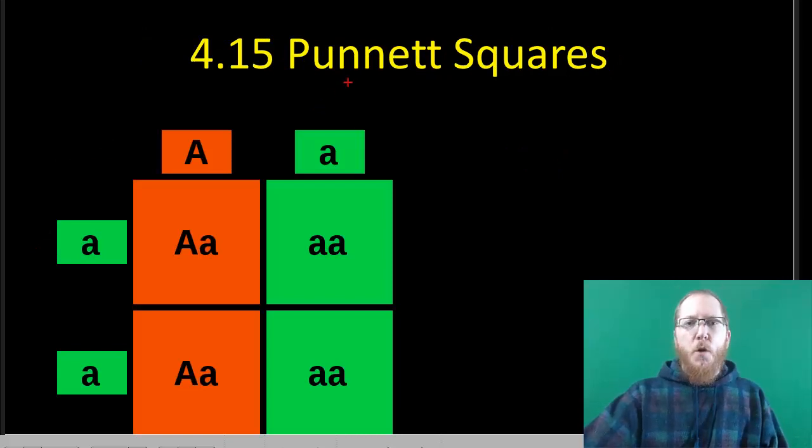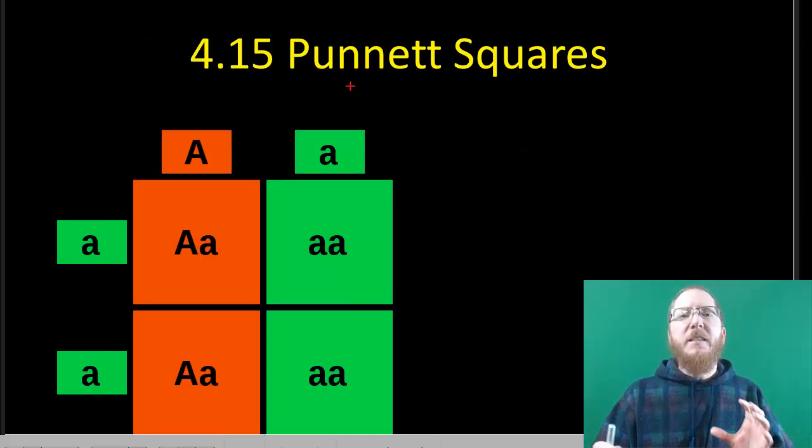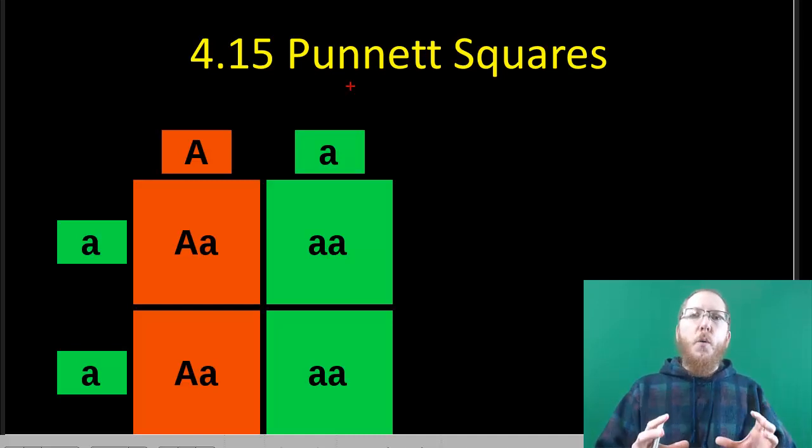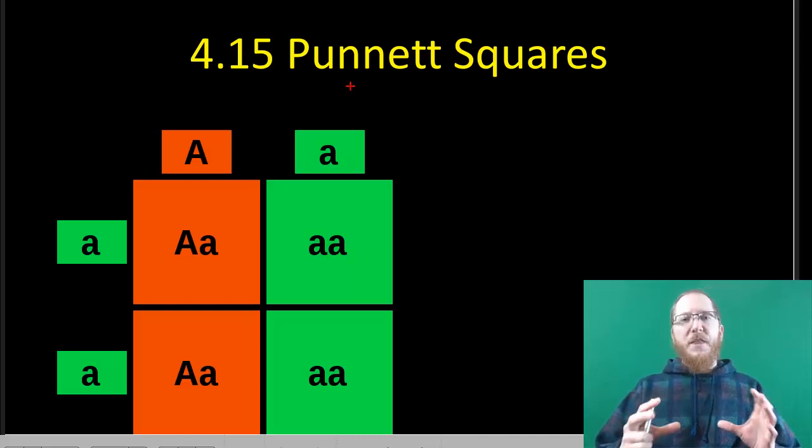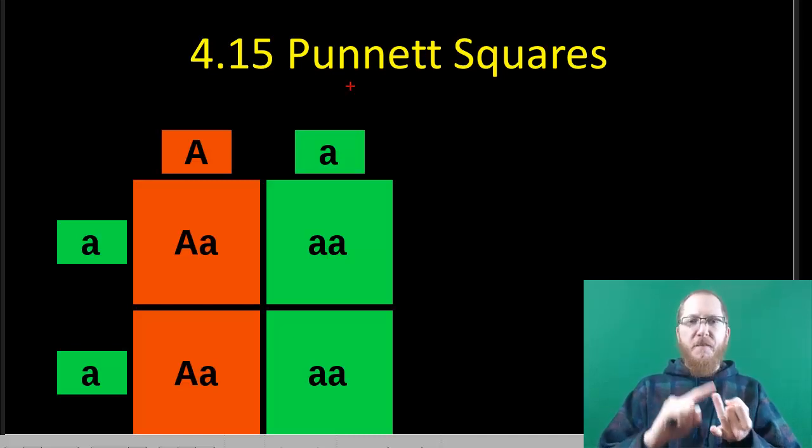Punnett squares are kind of a fairly easy way for us to structure things. If we know the parents and what their genotypes were, we can essentially calculate and predict what the offspring's likely genotypes and phenotypes will be.